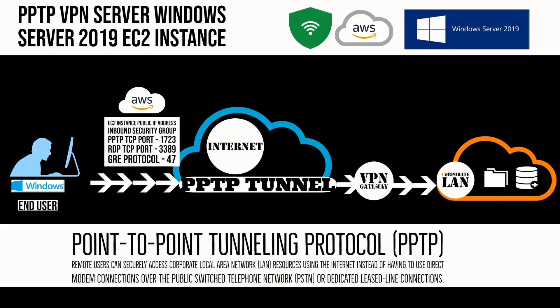The VPN we are using today is the Point-to-Point Tunnel Protocol VPN server on Windows Server 2019 running as an EC2 instance on Amazon Web Services. The EC2 instance will have a public IP address attached to it, and the user will use this IP address to establish the VPN connection.